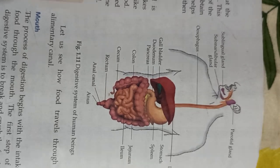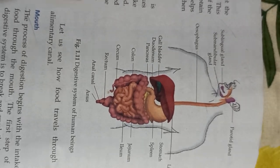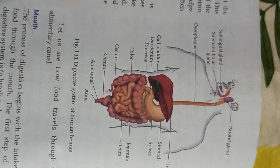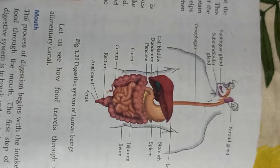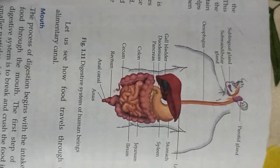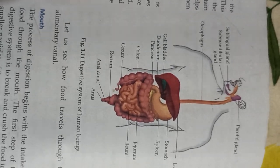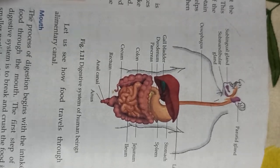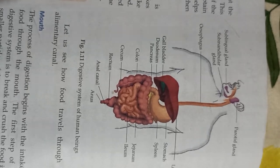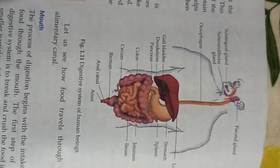In the stomach, the digestion of proteins starts as HCl (hydrochloric acid), which has a pH value of 1.8, gets mixed with the food and some gastric juices are also released.